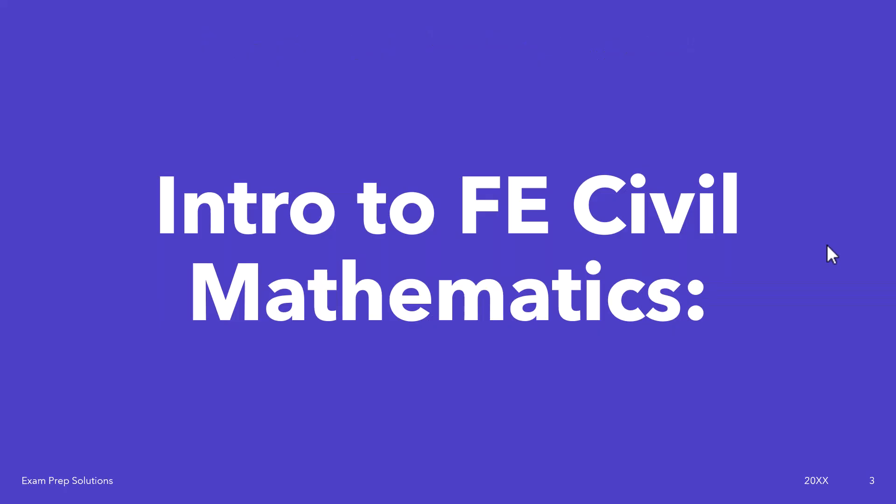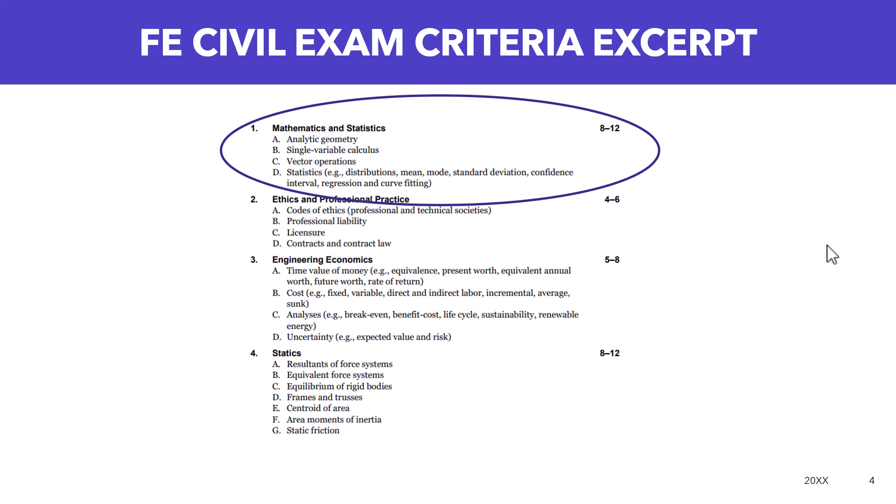Let's talk about the civil mathematics section. The first section on the FE exam has four parts: analytic geometry, single variable calculus, vector operations, and then statistics, which covers a wide variety of different topics.